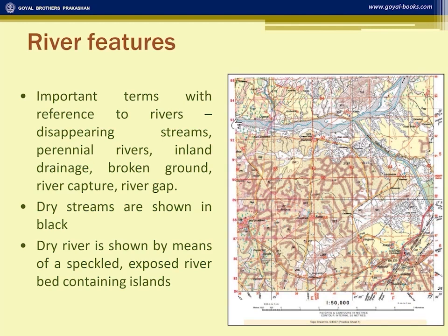Broken ground, found in grid square 9679, is generally found in dry or arid regions. The area is arid — sand features are present. Whenever there is rain, the topsoil is washed away, leaving the subsoil exposed as very uncultivable land. Broken ground is found only in arid or dry regions.